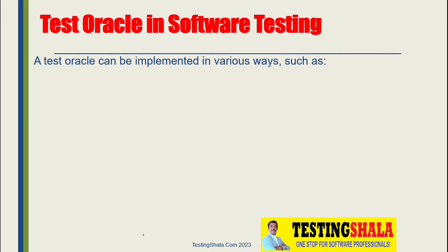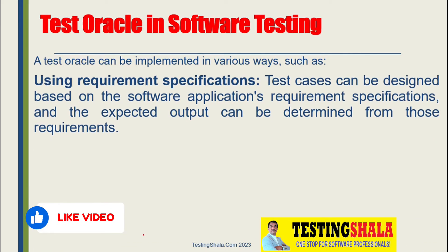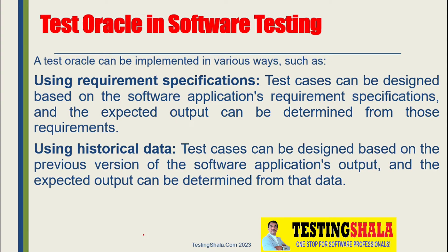We can implement a test Oracle in our project in various ways. One is using your requirement specification — you can clearly define what the expected results are from those requirements, and we can bring automation and write a test Oracle. Our second aspect is using historical data, where test cases can be designed based on the previous versions of the software application's output, and expected output can also be determined from that previous historical data.